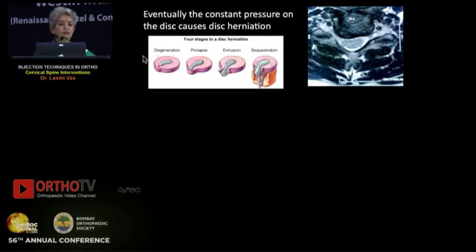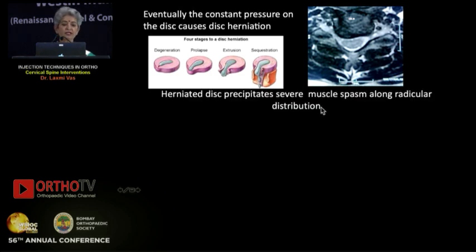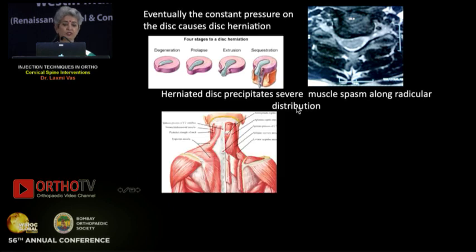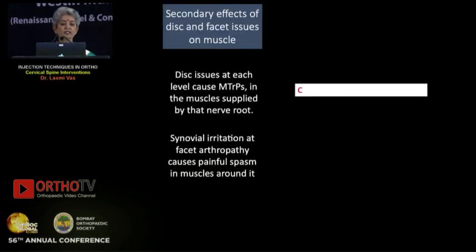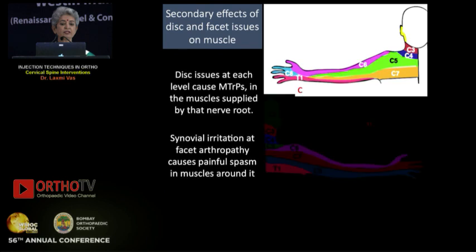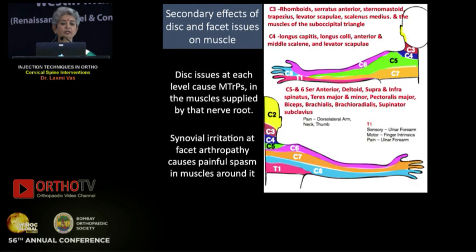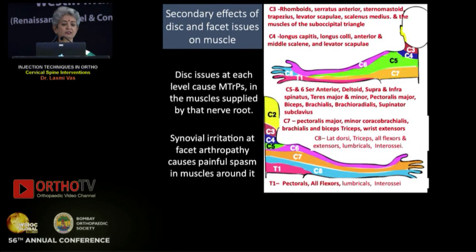Eventually, this pressure leads to disc herniation. So it is not the disc herniation which causes the muscle spasm, but the muscle spasm which leads to disc pathologies. Once that happens, it precipitates very severe muscle spasm — much, much more compared to the original spasm that precipitated the disc. This leads to secondary effects of radiculopathy in all the surrounding muscles.